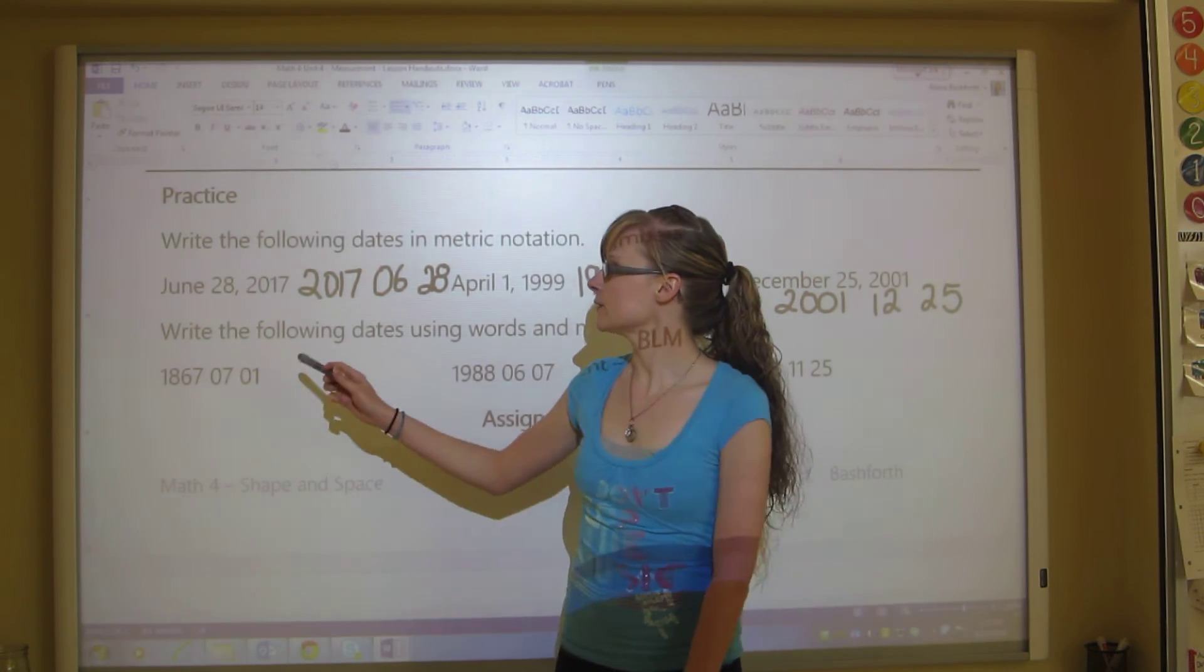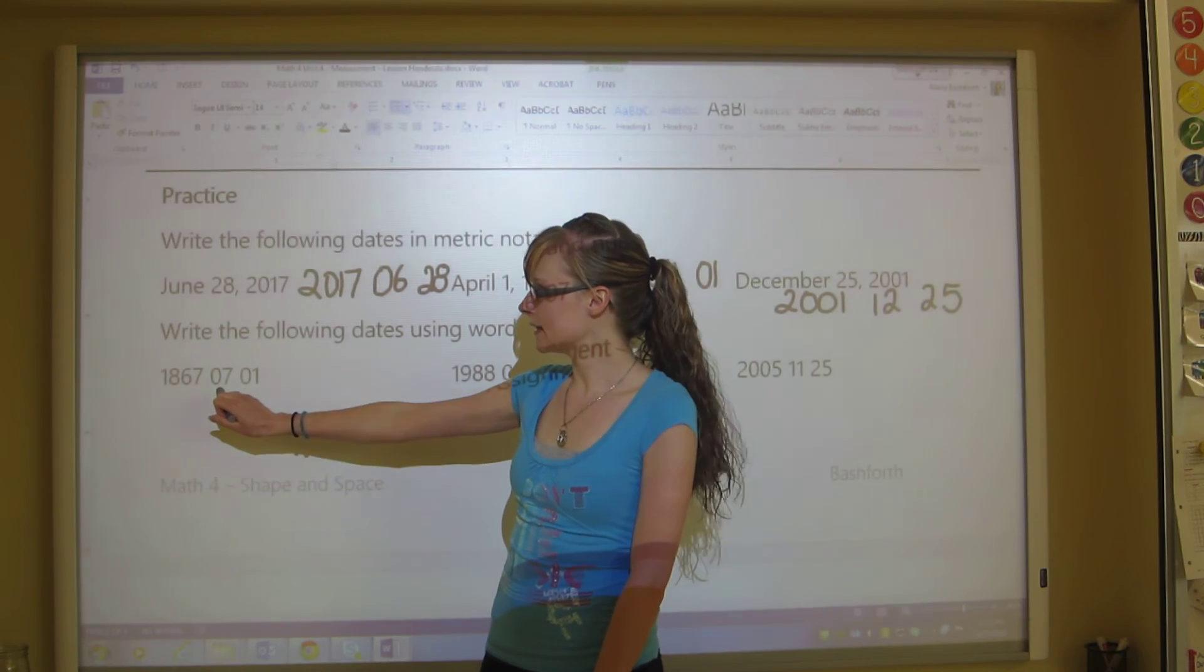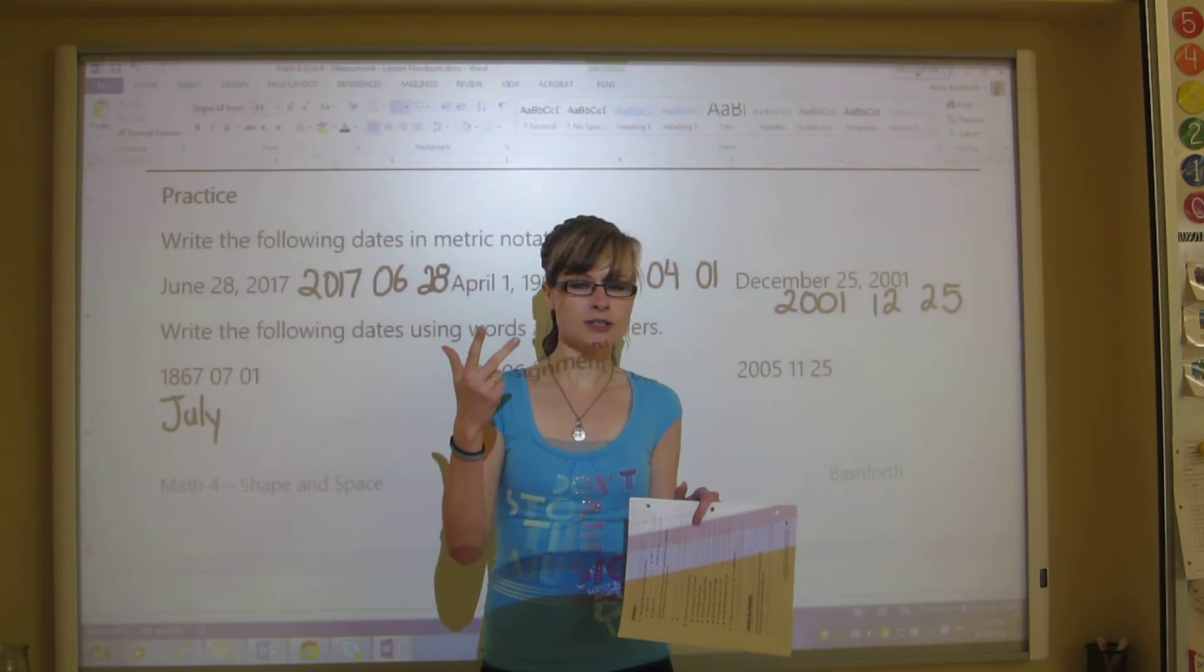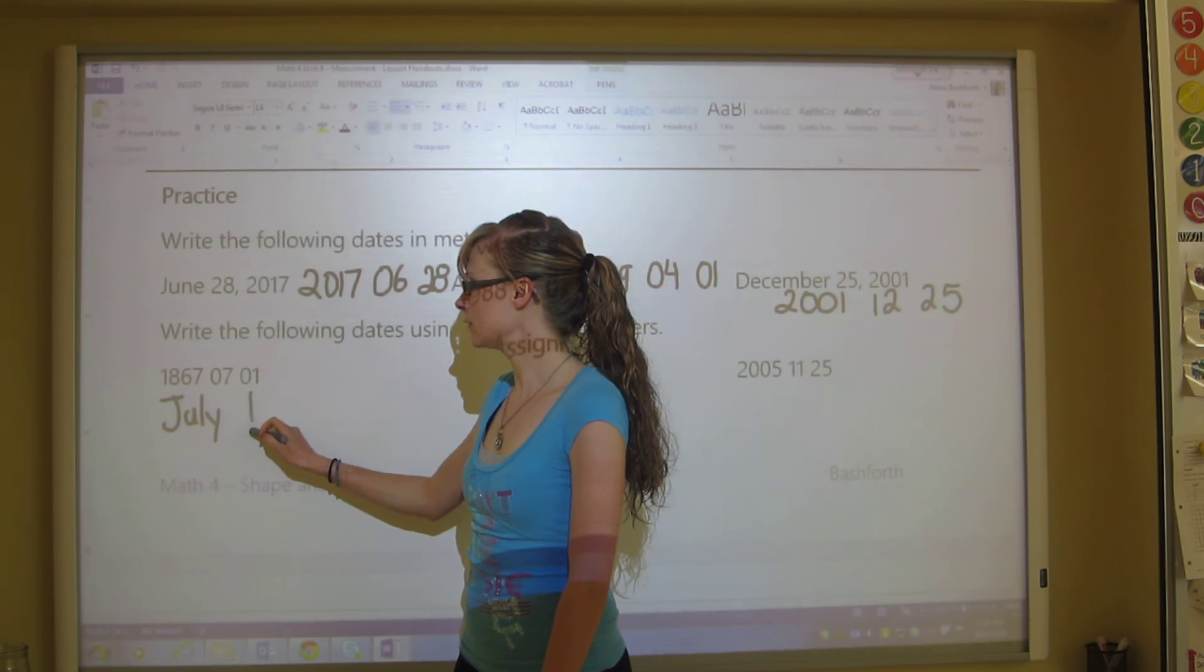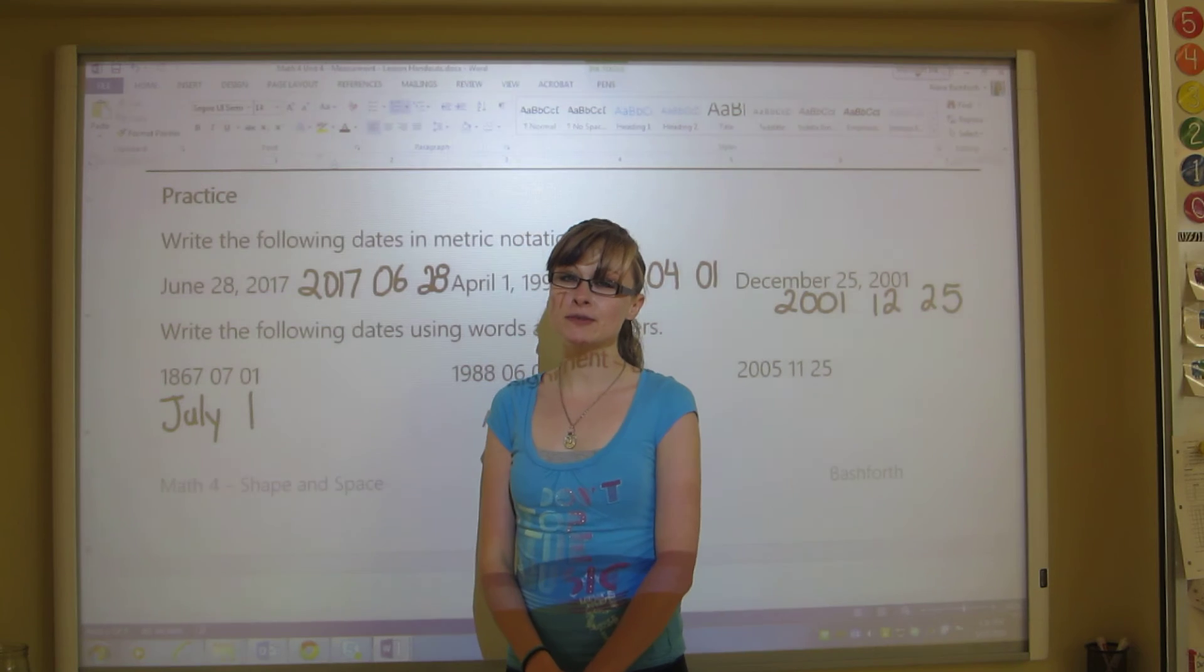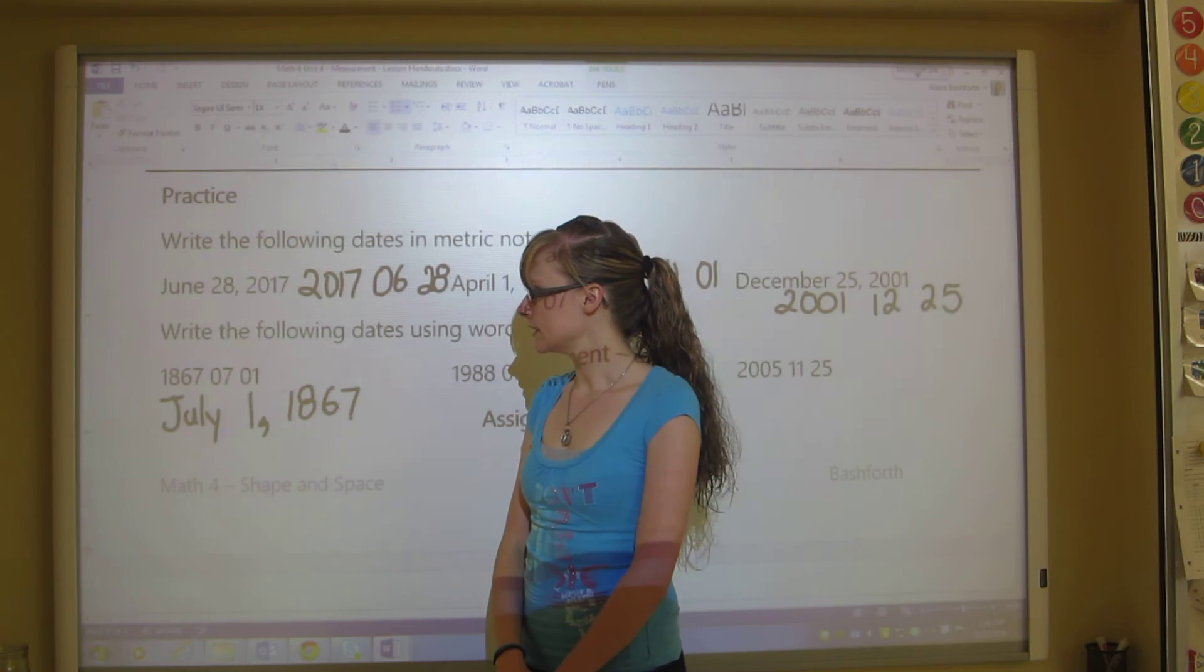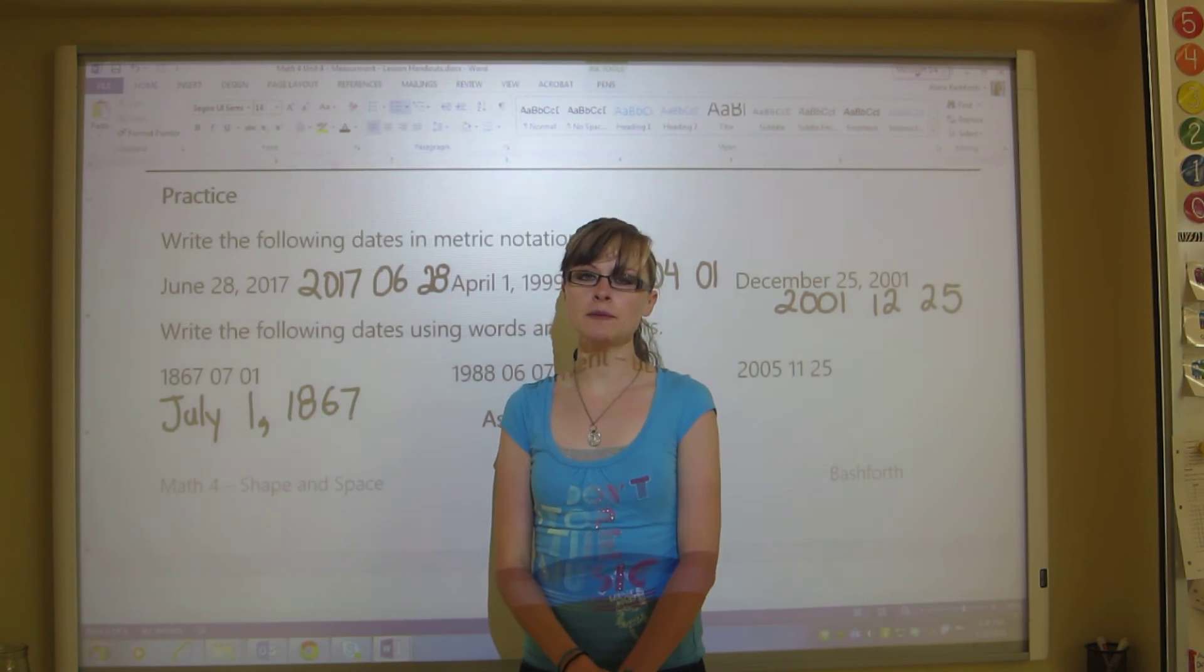So we need to write the following dates using words and numbers. So this one would be then, since this is the month, the seventh month is July. And you can count that out again, just like I've been showing. You start at January and count on your fingers, January, February, March, April, May, June, July, seventh month. And it's the first day. Now, when we write using numbers and words, we don't need that zero anymore in front of the one. That's only when we use only numbers. Instead, we put the comma after, and then we put a space and the date 1867. So July 1st, 1867 is our first one. Now, please pause the video and complete the other two questions and then play again once you're finished.